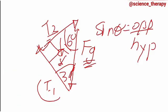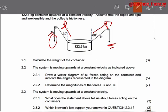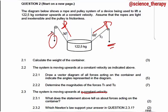That's it for 2.2.2. Let's go for 2.3. It says the system is moving upwards at a constant velocity. 2.3.1 says what does the statement above tell us about the forces acting on the container? So when you see the word constant velocity, what does it tell you about the forces acting on that particular object?